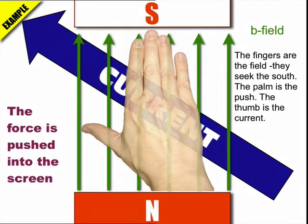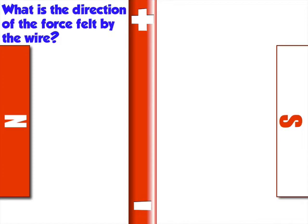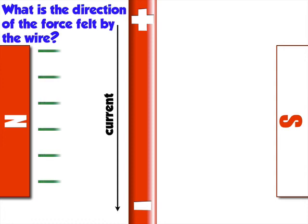Let's look at a second and final example. What is the direction of the force felt by the wire? So I've got this wire with a positive terminal above, negative below, and put it in a magnetic field. I've defined current as a flow of positive charge, so it's going to flow from positive to negative. And the B field is going to flow from north to south, or from left to right on my screen.